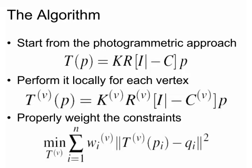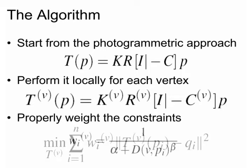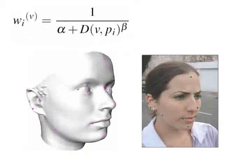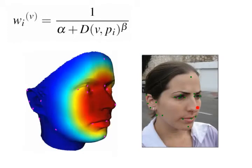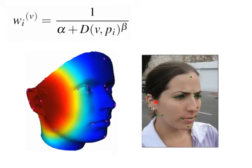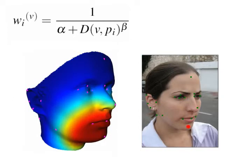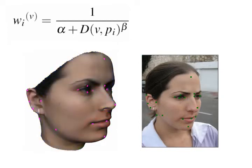In order to find a local camera projection for each vertex, the constraints are weighted non-uniformly. This weighting scheme takes into account the geodesic distances of a given point from the constraints. This ensures that the mapping satisfies the user constraints.